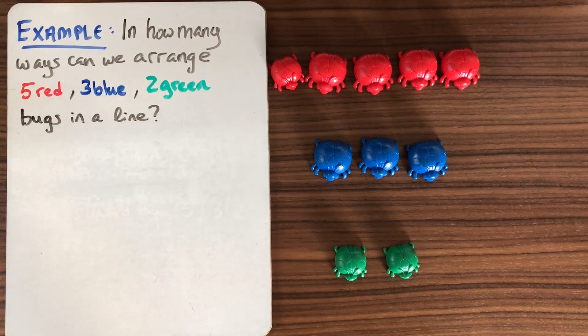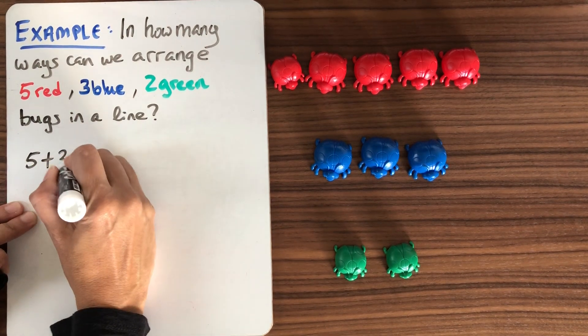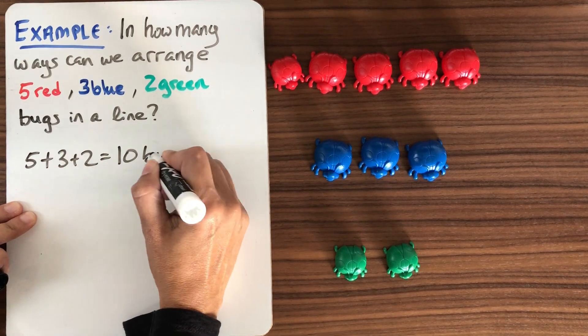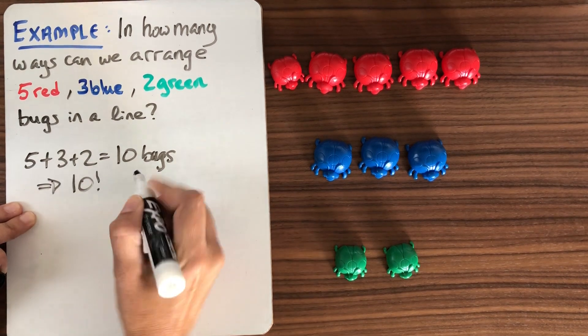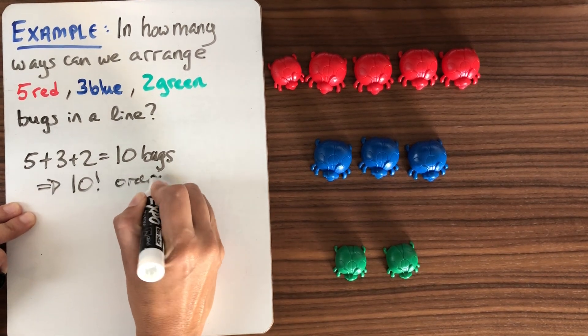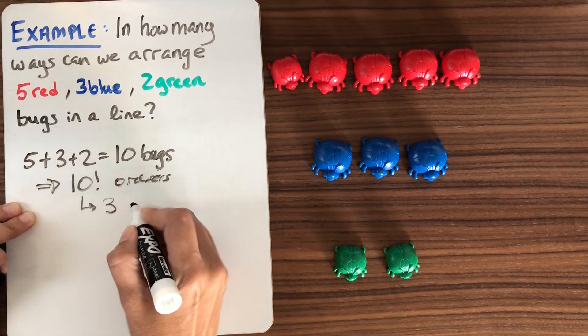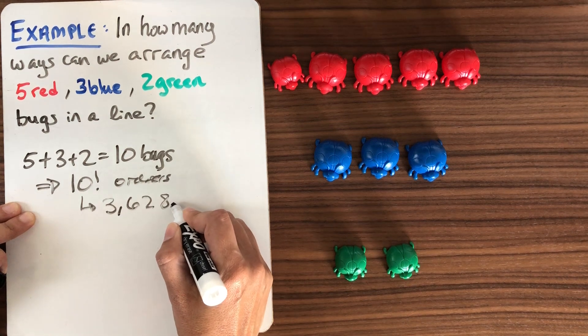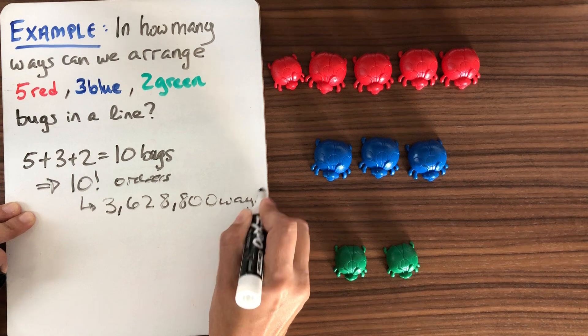The naive answer would be to say that we have a total number of 5 plus 3 plus 2 equals 10 bugs, which would say that there are 10 factorial orders. And just to remind you, 10 factorial is about 3.5 million, specifically 3,628,800. That would be a lot of ways.